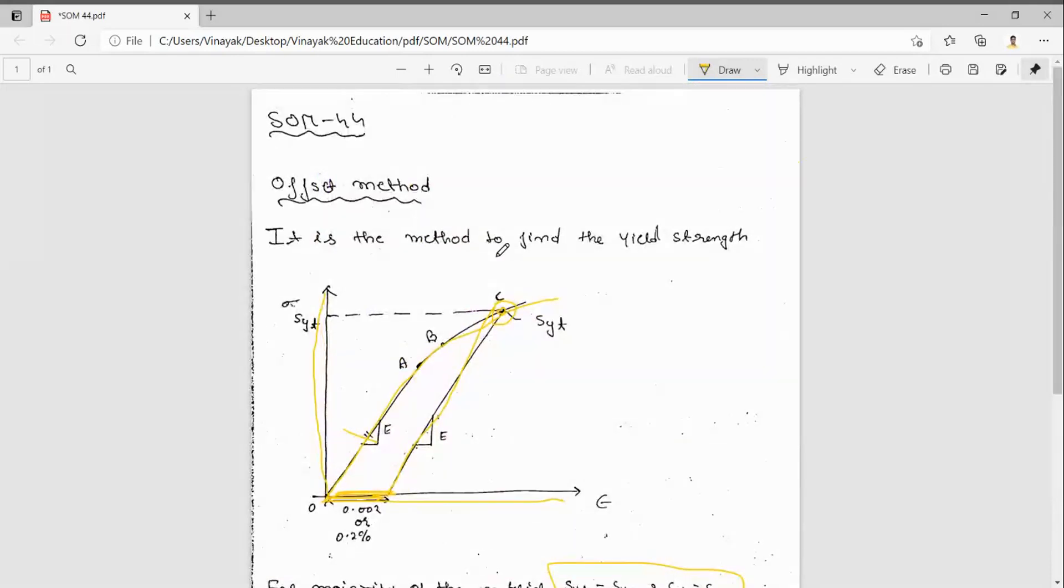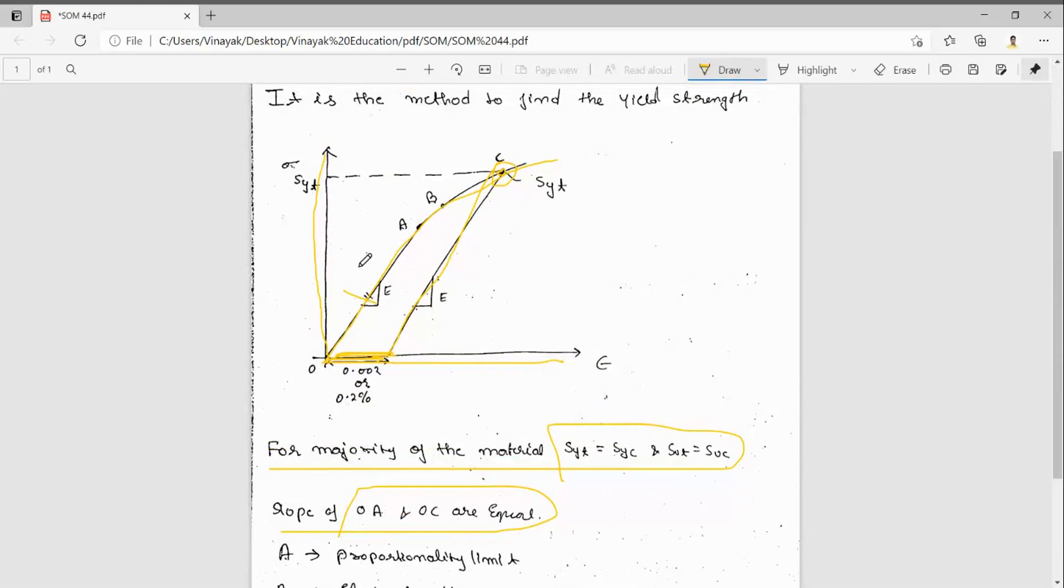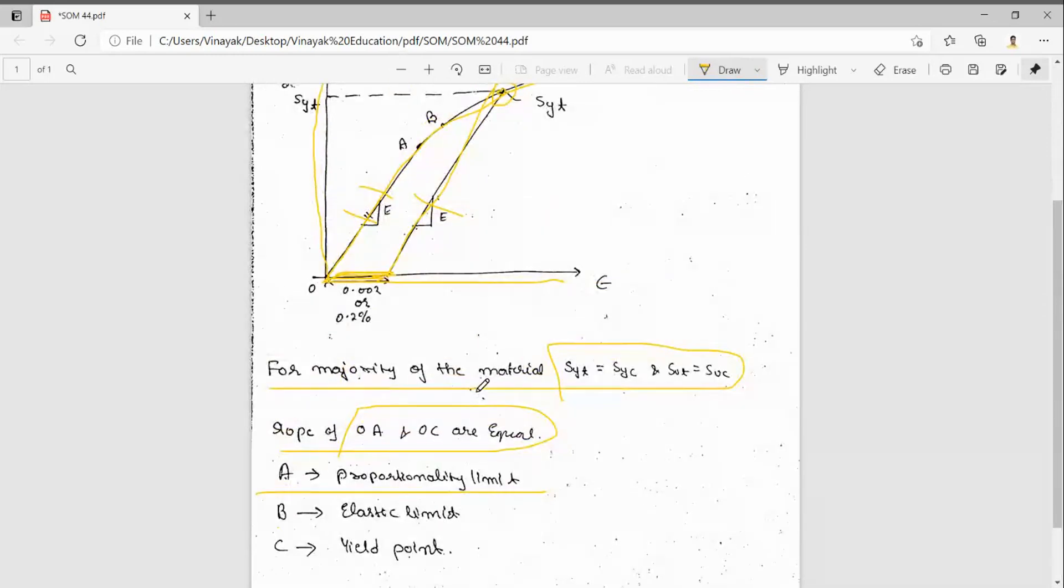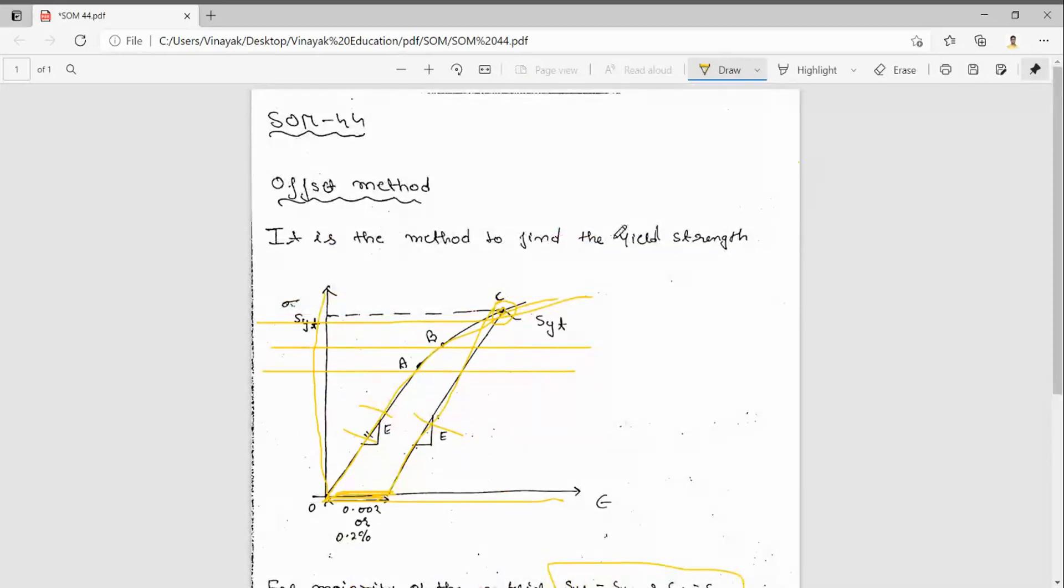In this way we can find the yield strength of the material. The slopes of OA and OC are equal. Point A is the proportionality limit, B is the elastic limit, and C is the yield point. So this is the proportionality limit, this is the elastic limit, and this is the yield point.